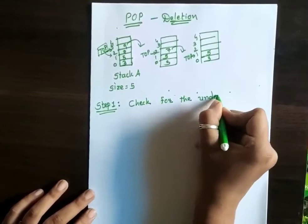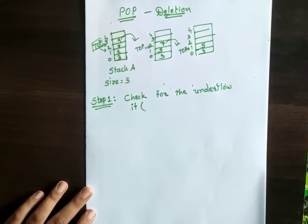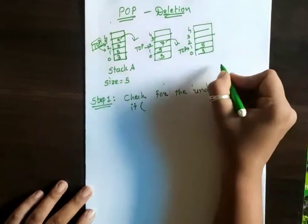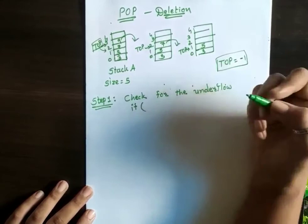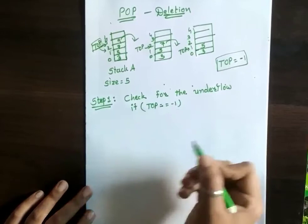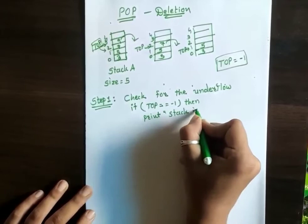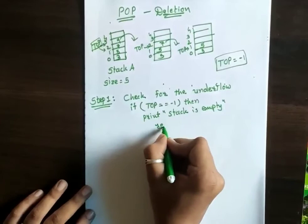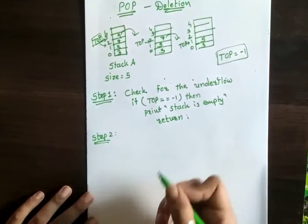Check for underflow. As I discussed earlier, for the empty stack we have one initial value of top: if top == -1, then I can say that my stack is empty. So the condition: if top == -1, print stack is empty — it is an error message — and then return from here, because if the stack is empty there is no need to go further. And if it is not like that, then go to Step 2.